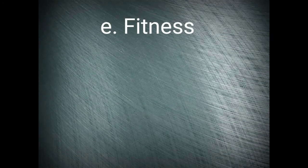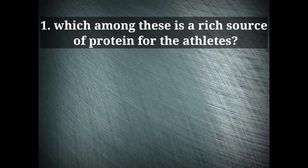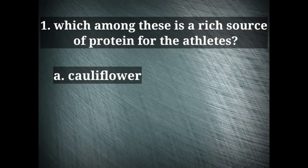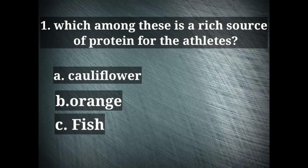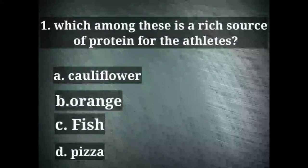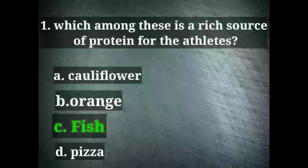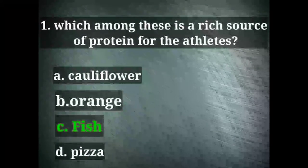The last topic is fitness. Let's see the sample questions. Which among these is a rich source of protein for the athletes? The options given are cauliflower, orange, fish and pizza. The right option here is fish. This is because fish comes under bodybuilding food.